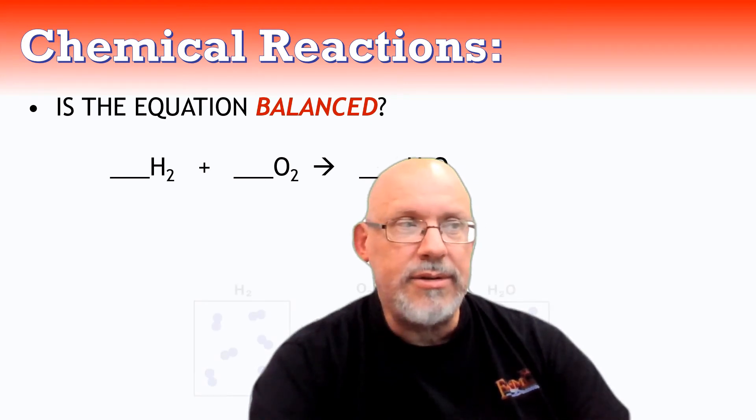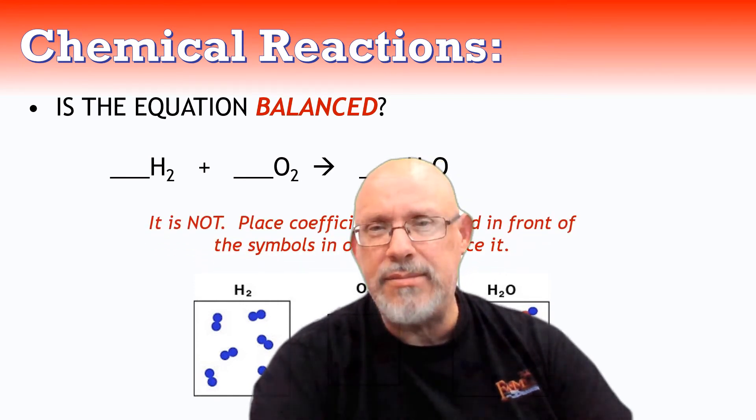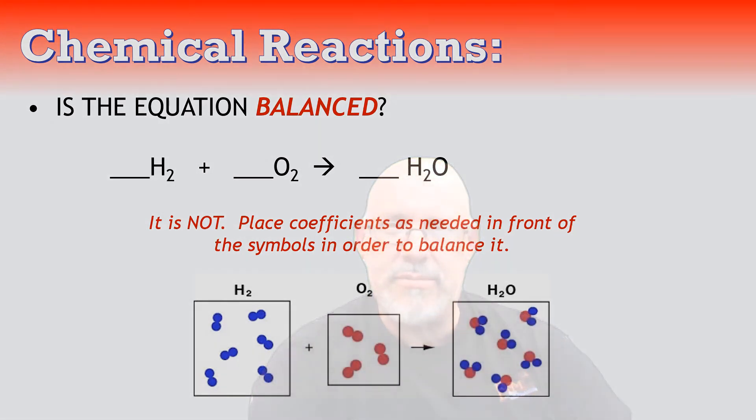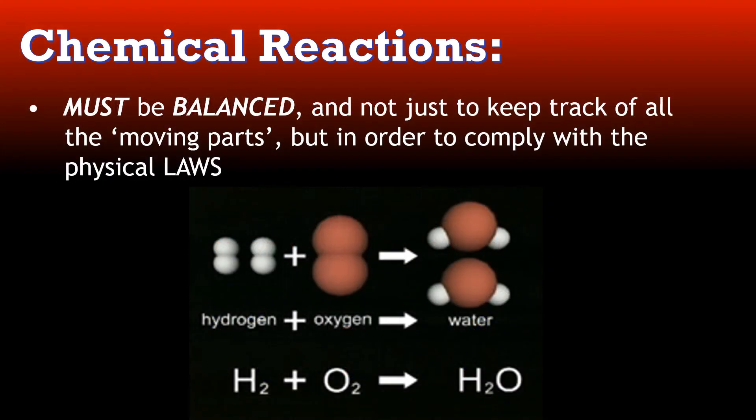Yes, it is unbalanced. A careful look makes that clear. And to balance it, what are we going to need to do? We're going to need to put coefficients in there in some of the spaces to even out the number of hydrogen and oxygen atoms. And why do we have to do that? We got to do it not just because we're interested in bookkeeping. We do it because it's the law. We have to obey the physical laws. And again, the principle at work here is that conservation of mass. The total number of each element on both sides of the equation, in this case hydrogen and oxygen, the total number before and after each element must be the same in order to avoid violating conservation of mass.